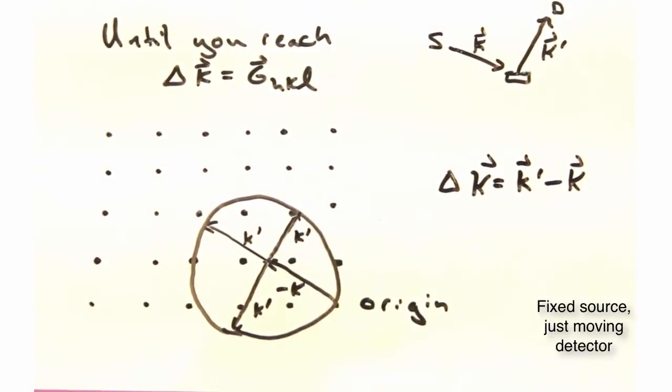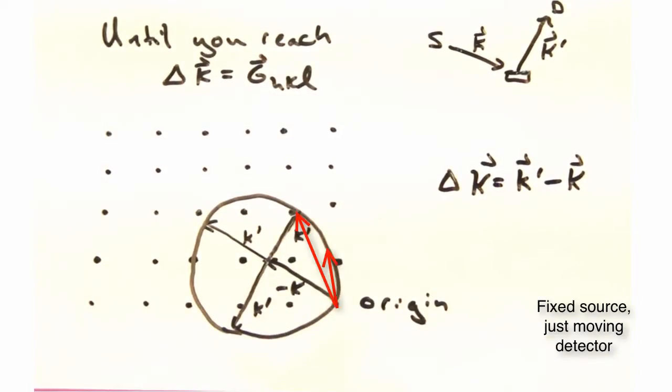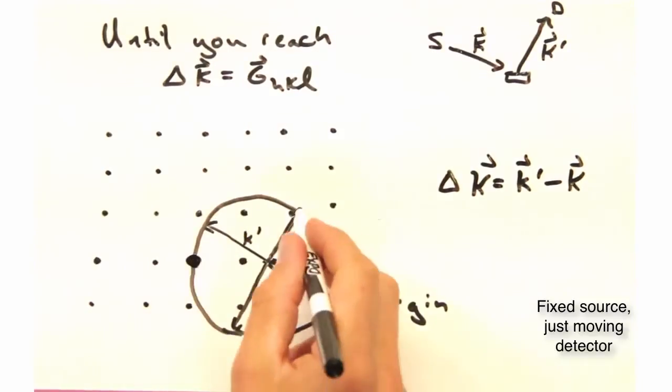The circle is a surface of all possible delta k conditions. So at the end of the day, the Ewald Sphere is a geometric way to visualize how and when we get constructive interference.